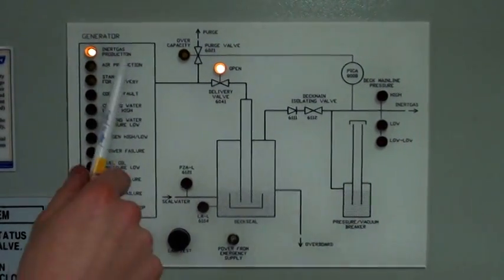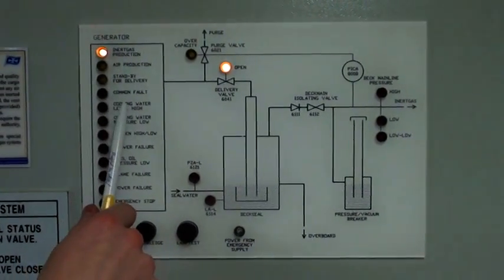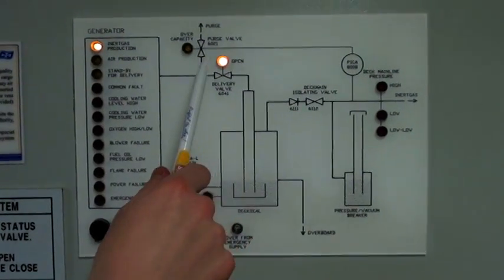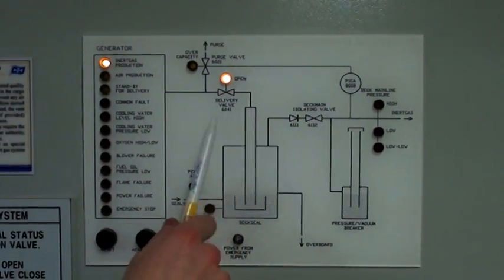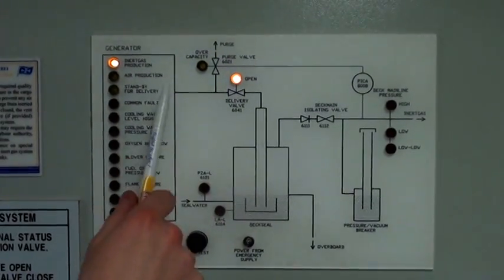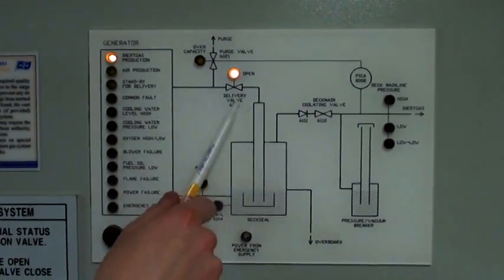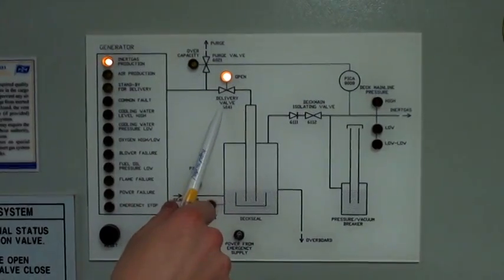From the generator located in the engine room, we have two valves. One is for purging and going to atmosphere. Another one is the delivery valve on deck.